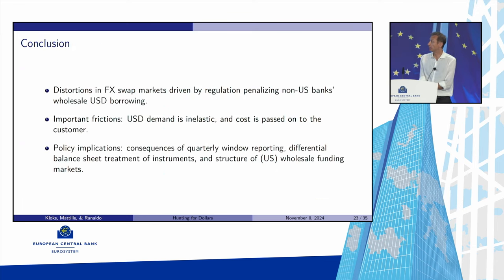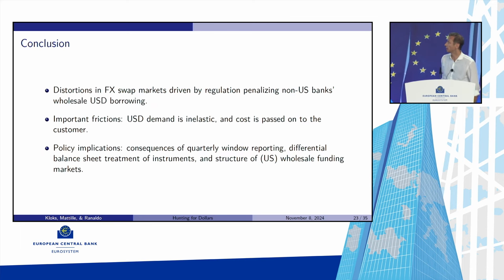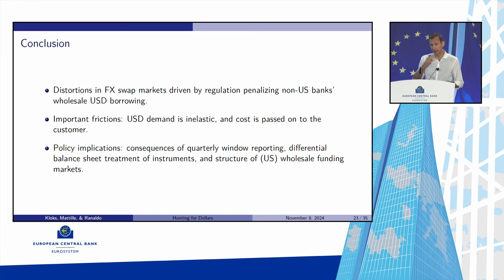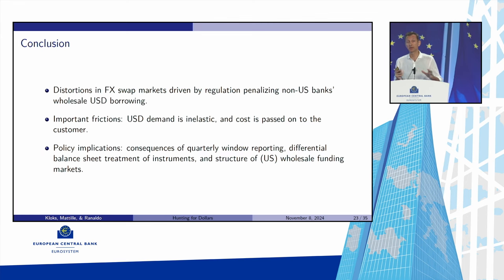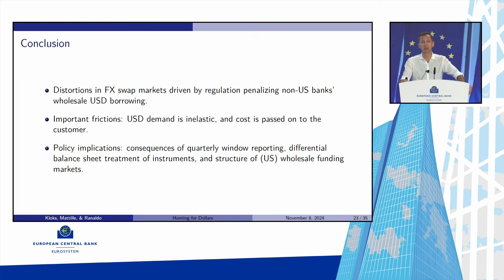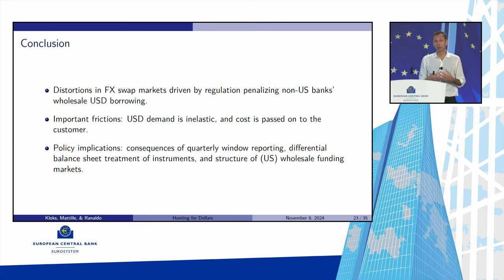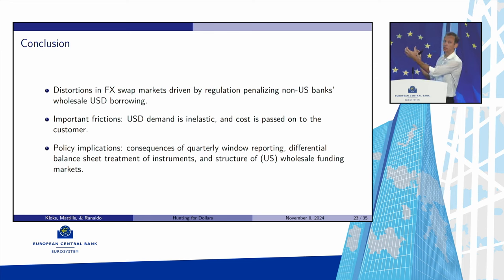In conclusion, this paper argues that there is a distortion in the FX swap market driven by regulation that penalizes non-US banks in the wholesale US dollar funding market. The important frictions are inelastic demand for US dollar funding, with costs passed to customers. The policy implication is that regulators should have an aggregate view of the financial system and try to view it holistically — when you regulate the wholesale funding market, you should also account for the effects on the currency market.